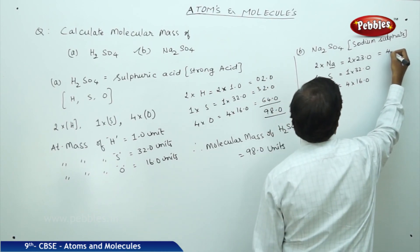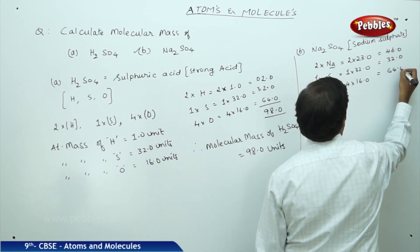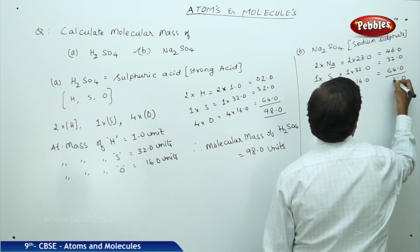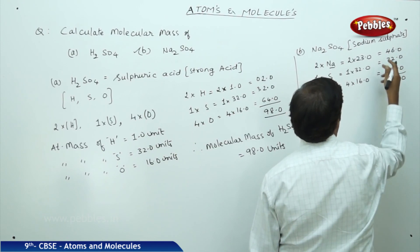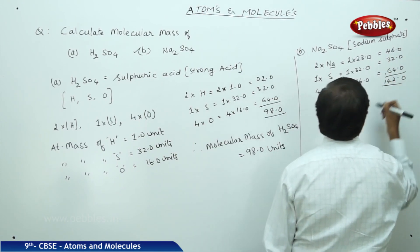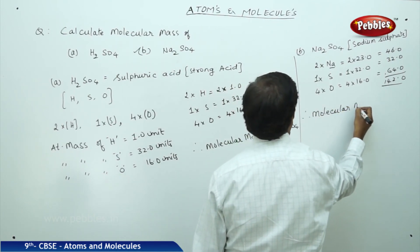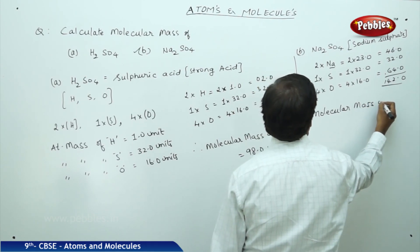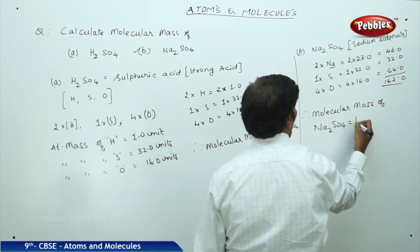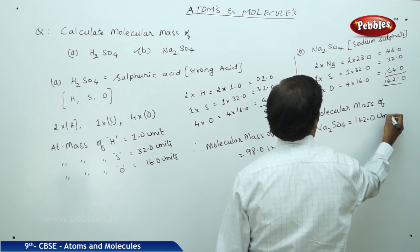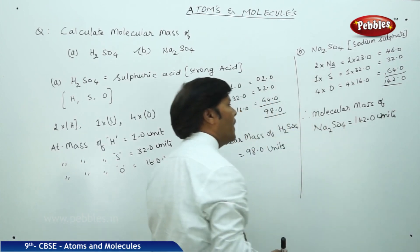Upon simplification: 2 into 23 equals 46.0, plus 1 into 32 equals 32.0, plus 4 into 16 equals 64.0. Adding these together gives 142.0. Therefore, the molecular mass of Na2SO4 is equal to 142.0 units.